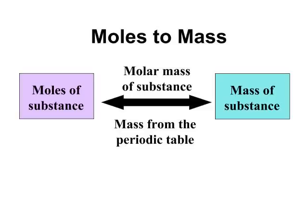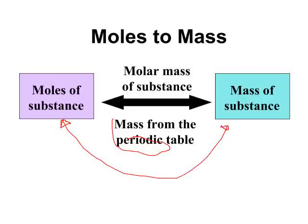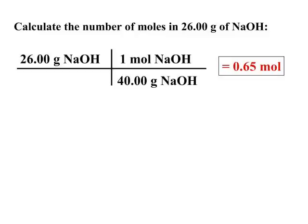The molar mass allows you to convert moles of substance to mass of substance. Using the molar mass from the periodic table, you're able to convert moles to mass or mass back to moles. For example: calculate the number of moles in 26 grams of sodium hydroxide. Starting with 26 grams of sodium hydroxide, the molar mass is 40 grams — sodium is 23, oxygen is 16, hydrogen is 1, adding up to 40 grams — which is equivalent to 1 mole.